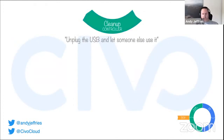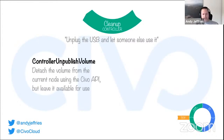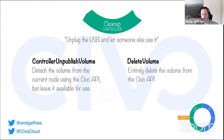The fourth stage is cleanup — giving the USB drive back and letting someone else use it. From the controller level, we unpublish it; in Civo's case we talk to KubeVirt and say we don't need this volume anymore. At this point there's no data loss. If another pod fires up in the future, as long as we haven't deleted the persistent volume claim, the volume still remains. Finally, if we truly delete the persistent volume claim, we delete the volume entirely from the Civo API, which trickles down into StorageOS and deletes it everywhere — and you don't pay for it anymore.